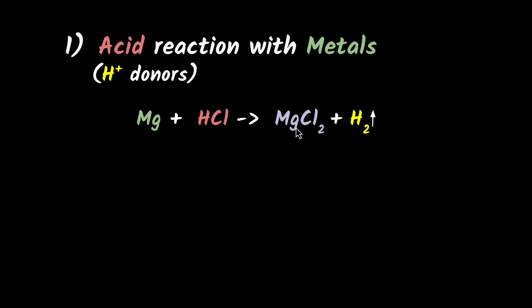Now, why do we get MgCl₂? Because Mg has a valency of 2, so it'll combine with 2 of the chlorine atoms. This is not a balanced equation yet — can you pause and see if you can balance it yourself first? Since you have 2Cl and 2H, you just put 2 here, and we are balanced.